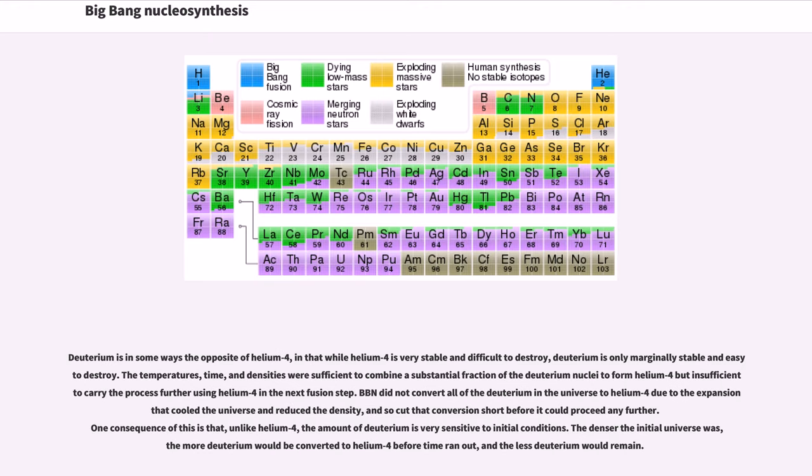Deuterium is in some ways the opposite of helium-4, in that while helium-4 is very stable and difficult to destroy, deuterium is only marginally stable and easy to destroy. The temperatures, time, and densities were sufficient to combine a substantial fraction of the deuterium nuclei to form helium-4 but insufficient to carry the process further using helium-4 in the next fusion step. BBN did not convert all of the deuterium in the universe to helium-4 due to the expansion having cooled the universe and reduced the density, and so cut that conversion short before it could proceed any further. One consequence of this is that, unlike helium-4, the amount of deuterium is very sensitive to initial conditions.